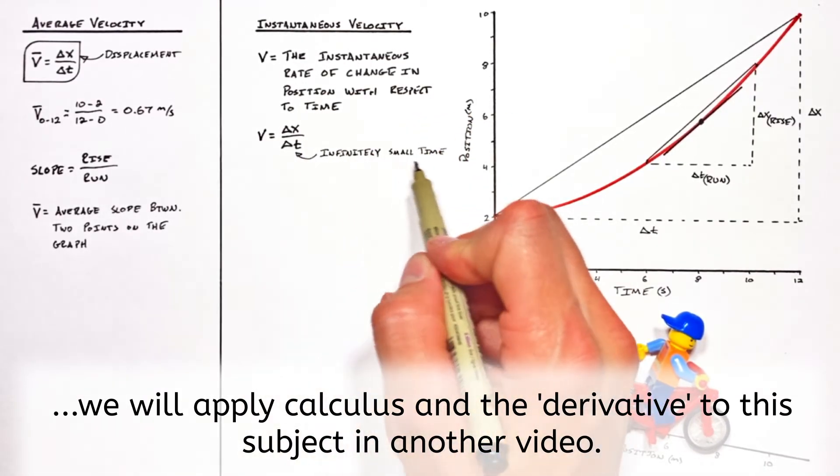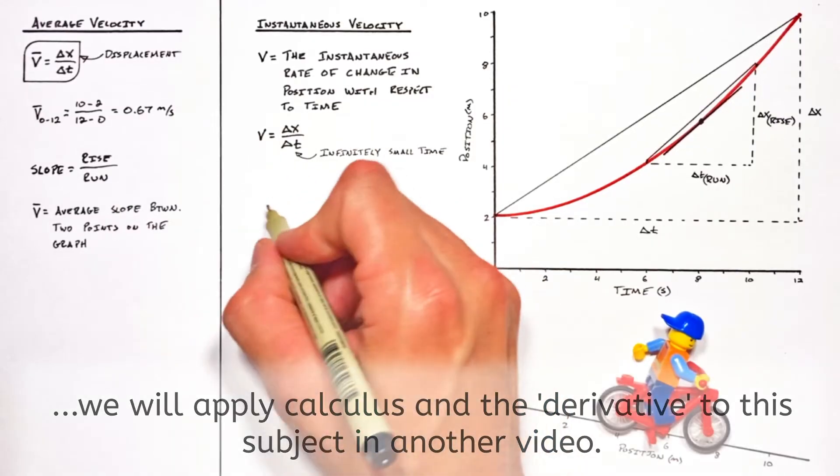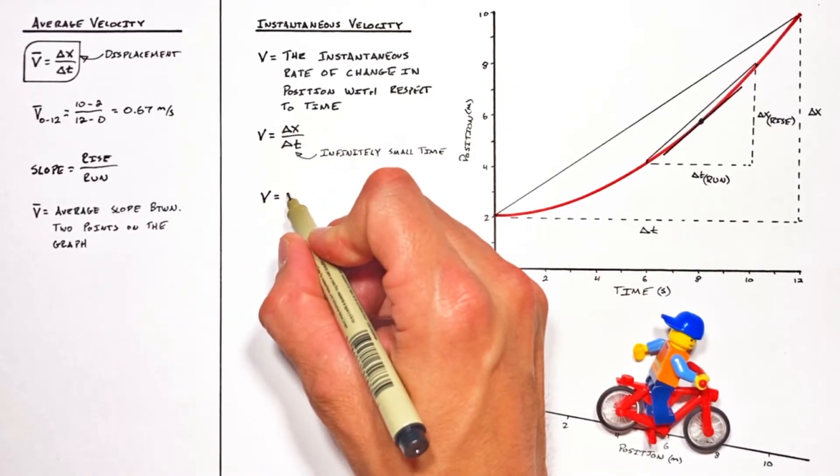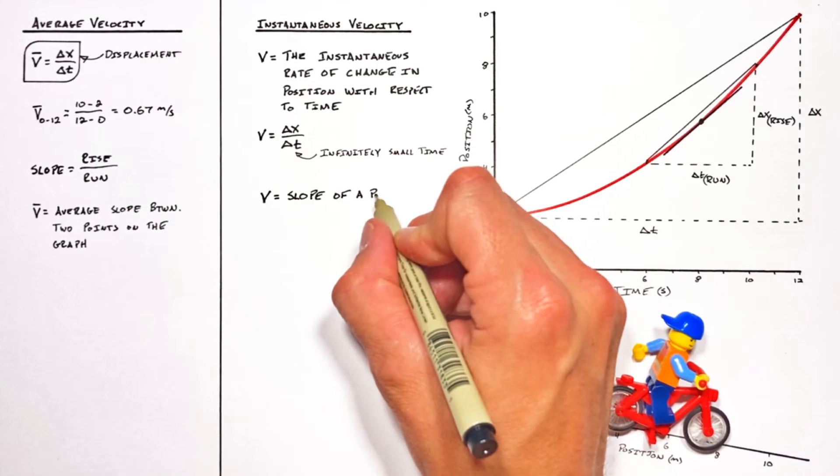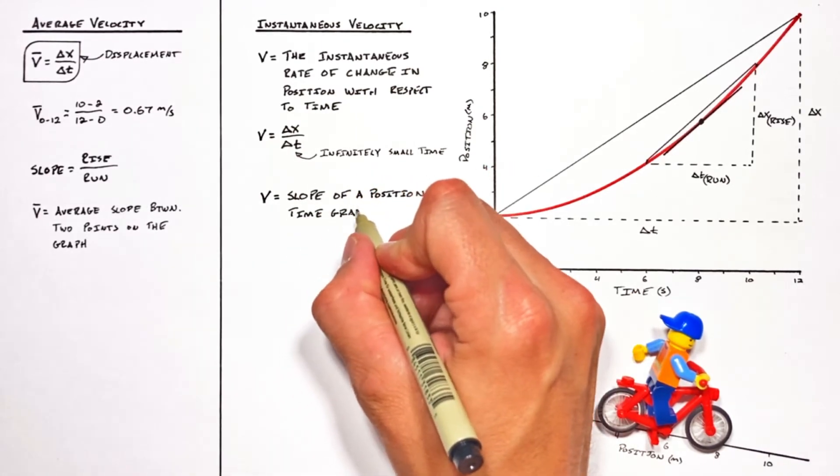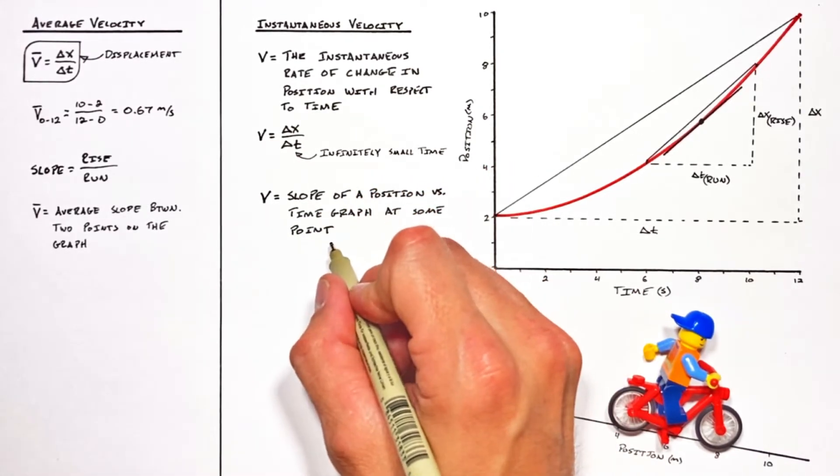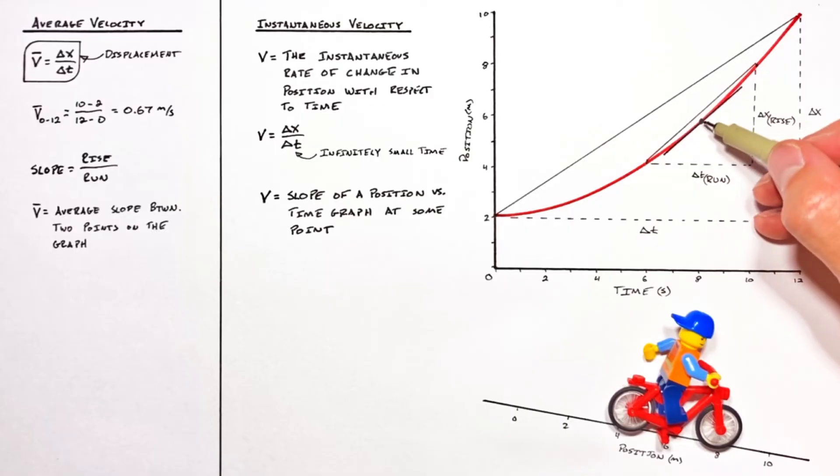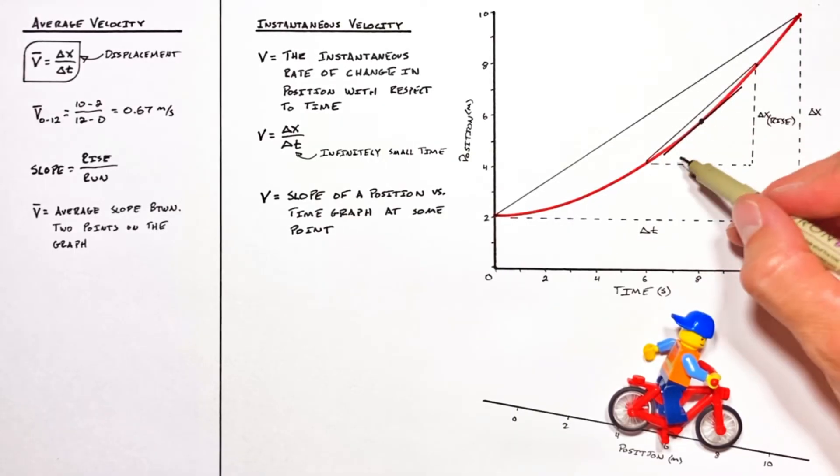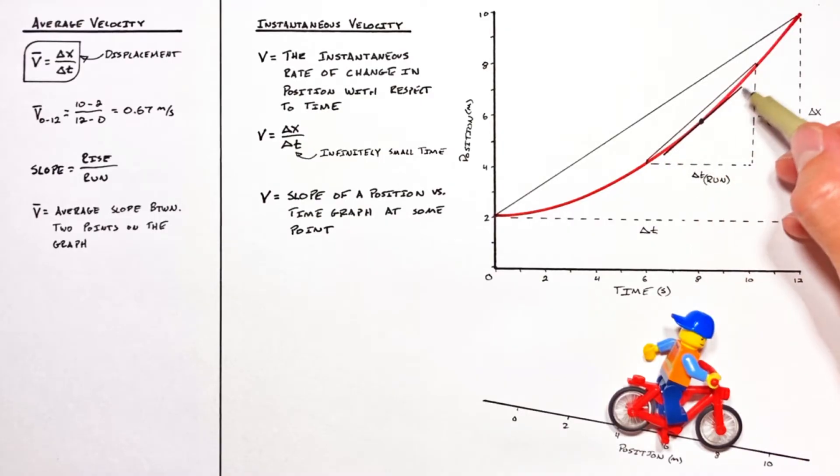Now, the idea of an infinitely small change in time can be somewhat daunting. But ultimately, all this means is the velocity is equal to the slope of a position versus time graph at some point. So if we want to know the speed or velocity of our little guy on a bike at this time of eight seconds, all we need to know is the slope of this line at that point in time.